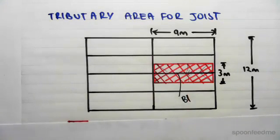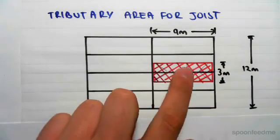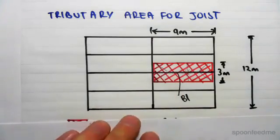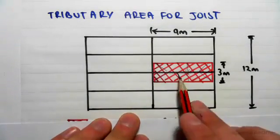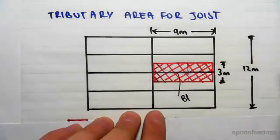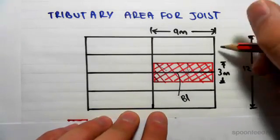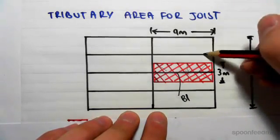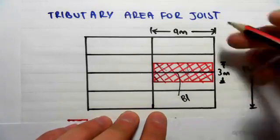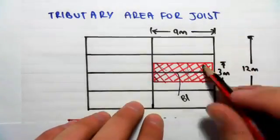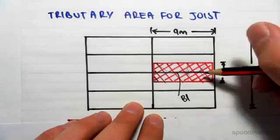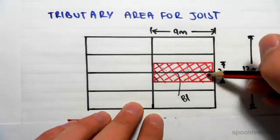So just to remind you what that looks like, if we take a typical tributary area for this joist, the B1 joist, we know that this total length is 12 meters, which means that the distance between each joist is 3 meters. The area of slab this joist will carry will be 1.5 meters in that direction and 1.5 meters in that direction.